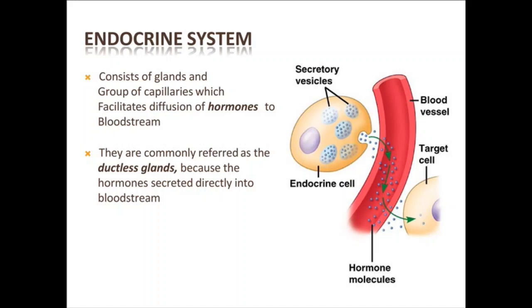The products secreted by these glands are called hormones. These hormones are diffused into the bloodstream.